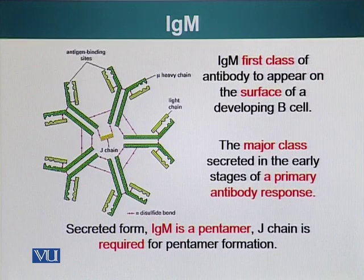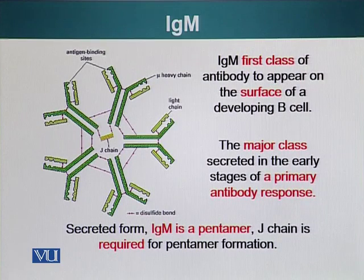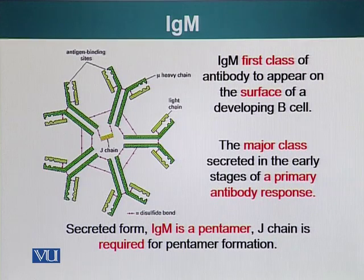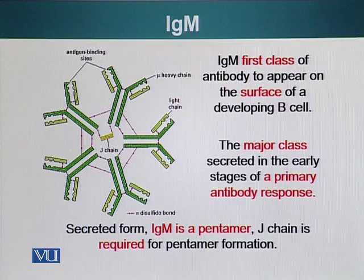Let's talk about IgM. This is the first class of antibody that appears on the surface of a developing B cell, embedded on its surface. Once the B cell has been activated, it will start producing antibodies that are not only present on its surface but are released into the bloodstream, where they can encounter the antigens that stimulated their production and neutralize them. IgM is the major class of antibody secreted in the early stages of the primary antibody response.